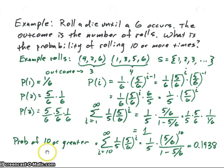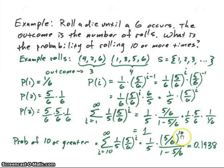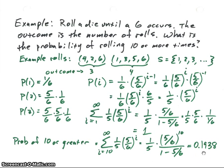So what's the probability of getting ten or greater? It's the sum from ten to infinity of our probability. Using one-fifth times R to the ten over one minus R, and plugging in five-sixths to the ten over one minus five-sixths, we end up with approximately 0.1938. That's the probability of rolling ten or more times, which actually seems surprisingly large.